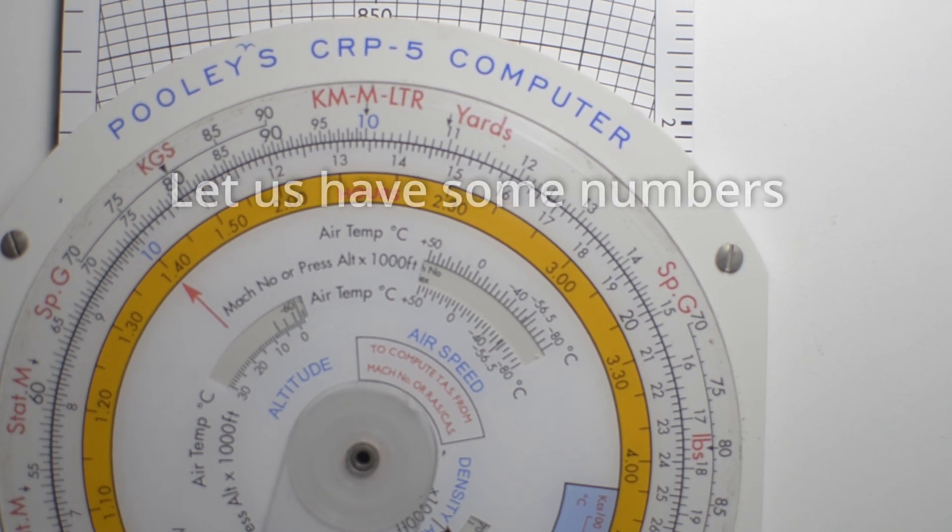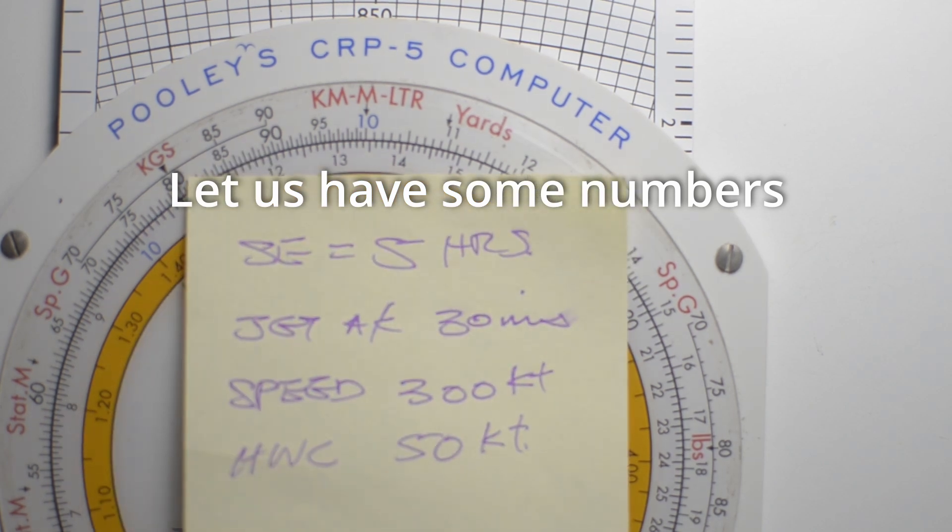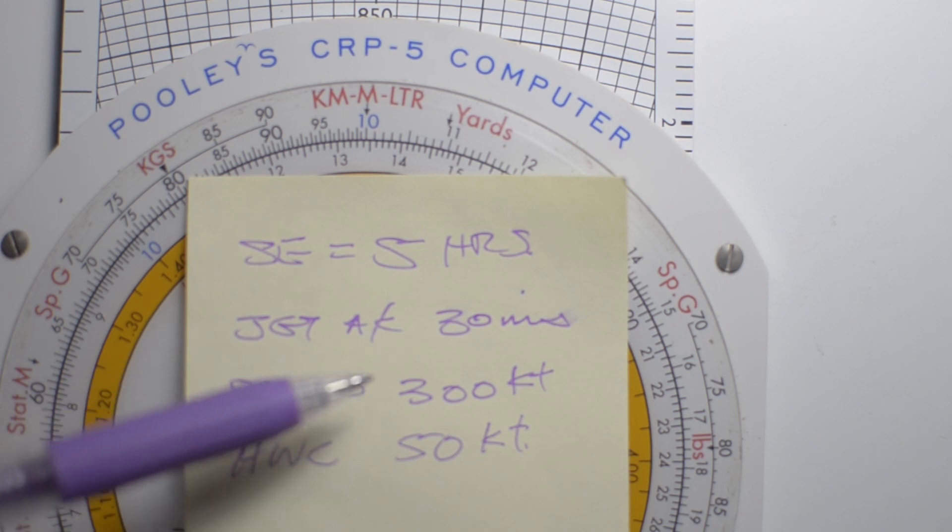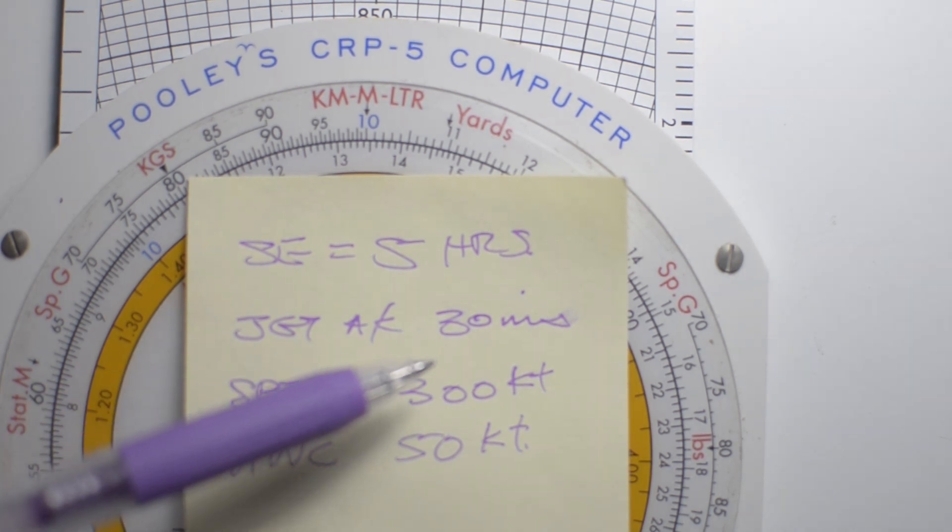Let's make some assumptions. The assumptions we will make are that our safe endurance is 5 hours and we're flying a jet aircraft, which means we have a mandatory reserve of 30 minutes.